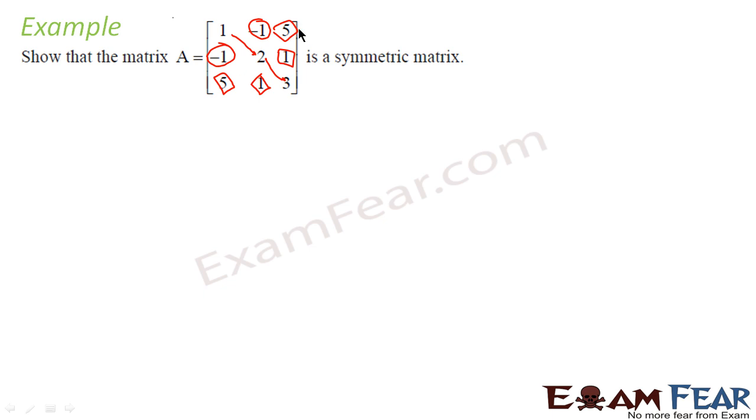But mathematically to prove, I can try this also. I can find the transpose of this: this row I'll make it as column, so this becomes this. Again, a row I'll make it as a column: 5, 1, 3. Row I'll make it as column. So if you see, this A dash is equal to A. So we can say that it is a symmetric matrix.